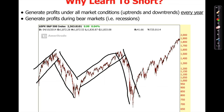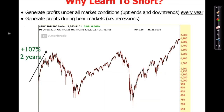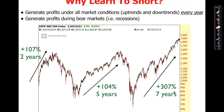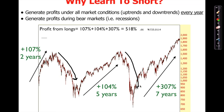In Wealth Academy, we spend a lot of time learning how to identify the trend accurately and how to identify when a trend changes direction from downtrend to uptrend. If you only make money when the price goes up, you'd have made 107% over two years, 104% over five years, and 307% from bottom to top over seven years — a total of 518% over that 16-year period. But during the two downtrend periods, you'd be making no money at all.